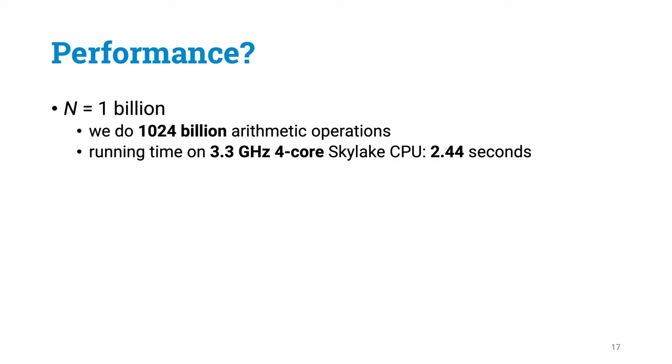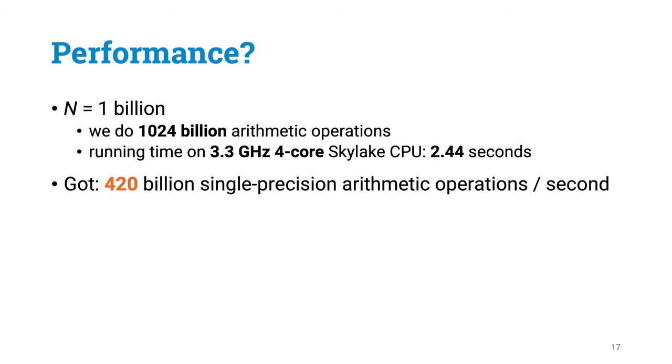So we managed to do 420 billion arithmetic operations per second. A pretty impressive number for a normal desktop CPU. So are we happy?